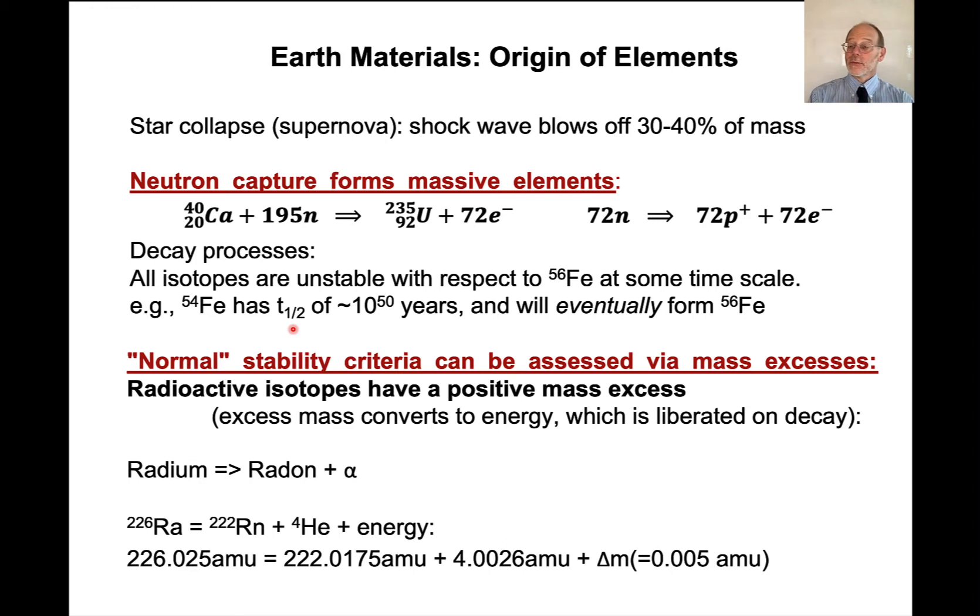Okay, so radioactive decay is a spontaneous process. It has to release energy. And the question here is, where does that energy come from? So let's take one radioactive decay. The radium will radioactively decay to form radon plus an alpha particle. An alpha particle is a helium nucleus. And so we can express this in terms of isotopes. Radium 226 decays to form radon 222 plus helium plus energy. And where's that energy come from?